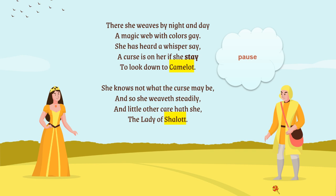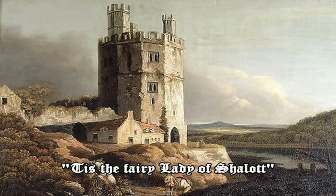She knows not what the curse may be, and so she weaves steadily, because the curse might be a quiet but intense one. The Lady of Shalott keeps cautious and prefers to be safe. She has little other care — she is all the time weaving by her loom. This is an image of where the Lady of Shalott lived.